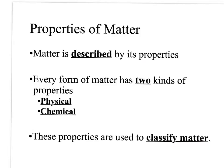Properties of matter. We've been discussing this for a while now, but matter can be described by its variety of properties. Every form of matter has two kinds of properties: they're all going to have physical properties, and they're all going to have chemical properties. And we use those two property types to classify our matter.